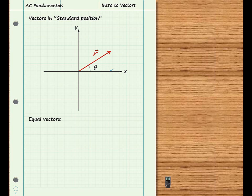For example, vector V has the same magnitude and direction as vector R, so these two vectors are equal even though they are not both in standard position.